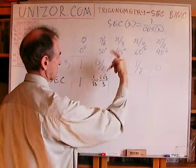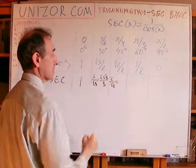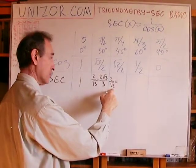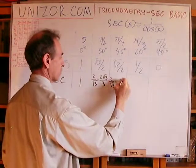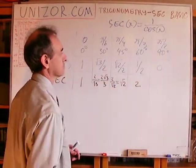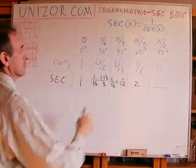Now this is 2 over square root of 2, which is equal to... If you multiply by square root of 2, you will have 2 square root of 2 over 2, so it's square root of 2. This is 2, and this doesn't exist because the cosine equals 0, that's the denominator.